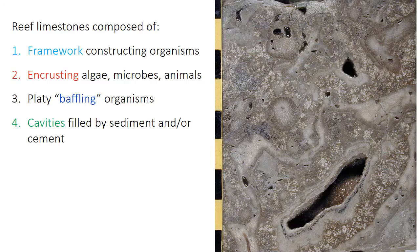Reef limestones can be composed of framework — the organism skeletons that built the rigid structure. In this Devonian reef, those organisms include corals and sponges; a few corals highlighted by light blue arrows contribute to the framework construction. Encrusting or binding algae, microbes, or even animals can also be important. The speckly or mottled — often called clotted — textures indicated by the red arrow are areas of microbial binding.